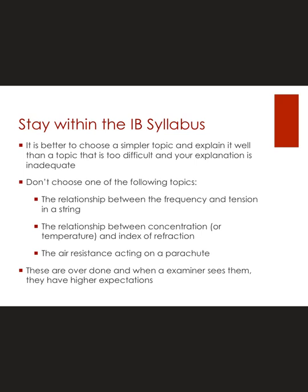Normally we suggest you have two or three ways to improve your IA, but with overused topics the examiners already have two or three set things they're looking for. If you go beyond that, they might say you've missed some major ones. Whereas if you have something a little more unique, your two or three improvements will be given much more credibility.